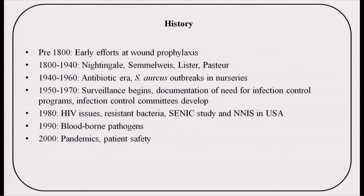Earlier, these used to be called hospital-acquired infections. In the USA, landmark studies were conducted in the 1970s which triggered the rapid evolution of infection prevention and control in the clinical setting. Ongoing surveillance of healthcare-associated infections was initiated and further stimulated when infection prevention and control and surveillance activities were mandated by the Joint Commission for the Accreditation of Healthcare Organizations, popularly known as JCI.